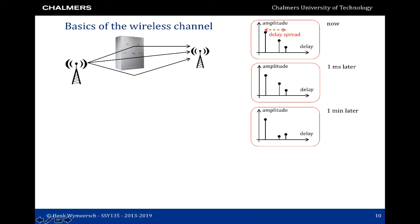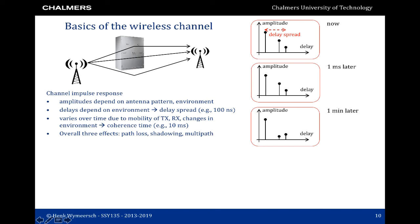It is important that in this course we have two notions of time: delay and time. The channel impulse response values depend on the antenna pattern and the environment. The delays in the delay domain also depend on the environment, with typical values of the delay spread being on the order of a few hundred nanoseconds. The delay spread is the time between the first path and the last path. The channel varies over time due to mobility of the user at a much slower time scale; the time over which the channel is roughly the same is called the coherence time, which can be on the order of 10 milliseconds. Note that there are many orders of magnitude difference between the delay spread and the coherence time.